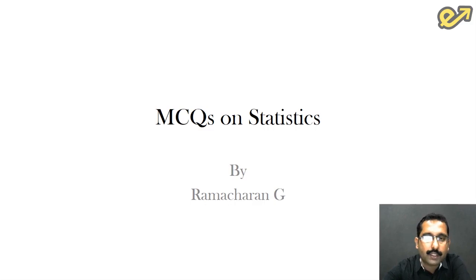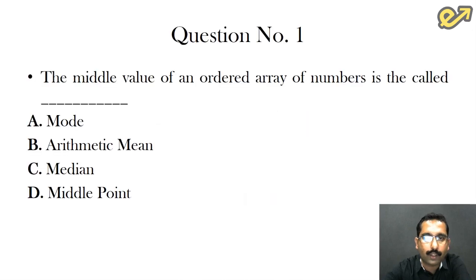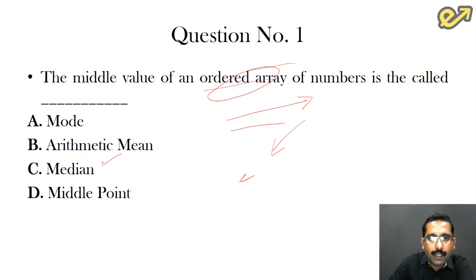There are 10 questions in this video and let us try to learn the answers for the 10 questions. The first question: the middle value of an ordered array of numbers is called? Now what we need to understand here is the ordered array. It means that the numbers have been arranged in a particular order, either ascending or descending. In that case, the middle number is generally called the median. The middle value of any ordered array of numbers is called the median.